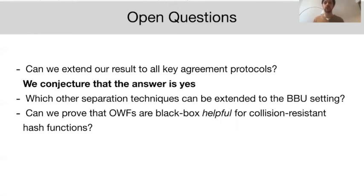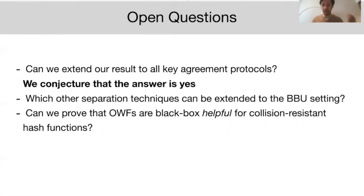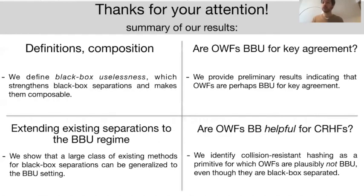Several interesting open questions remain. The core one is whether we can extend our result to all key agreement protocols, not only unbalanced ones — we conjecture this can be done. Another direction is to expand the class of separation techniques that lift to black box uselessness results. It would also be very interesting to prove that one-way functions are black box helpful for collision-resistant hash functions; we conjecture this is the case and relate it to other conjectures about random oracles, but could not prove it. That's all — I hope you enjoyed the talk.